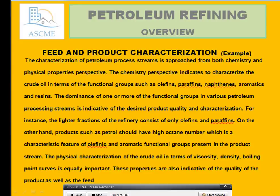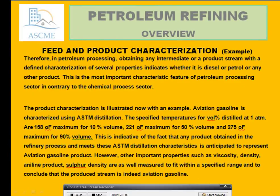The physical characterization of the crude oil in terms of the various density properties is equally important. These properties are also indicative of the quality of the product as well as the feed. Therefore, in the petroleum processing, the octane number of the intermediate or product stream defines the categorization of the properties, indicating whether it is diesel, petrol, or any other product. This is the most important characterized feature of the petroleum process.